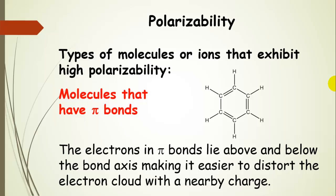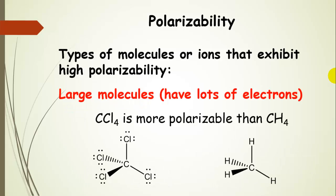Another type of molecule with high polarizability is one with pi bonds. In a pi bond, electron density is above and below the bond axis, making it easier to distort that electron cloud with a nearby charge. Large molecules also have high polarizability — for example, carbon tetrafluoride versus methane. Carbon tetrafluoride has many more electrons, making it more polarizable and larger than methane.